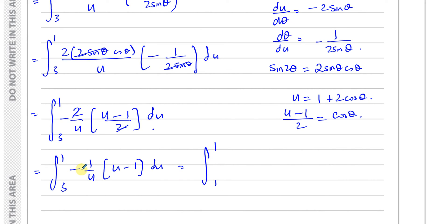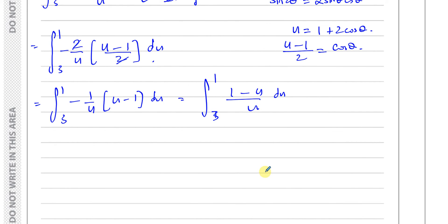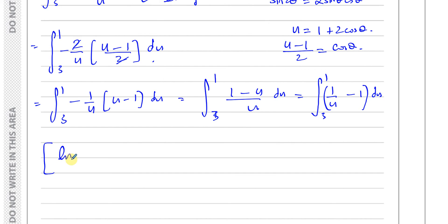Multiplying out gives (1 − u)/u, which I split into two separate fractions: 1/u − 1. This is ready to integrate with limits 1 on top and 3 underneath. Integrating: 1/u integrates to ln|u| and 1 integrates to u. So I evaluate [ln|u| − u] from 1 to 3.